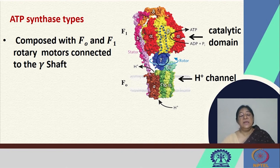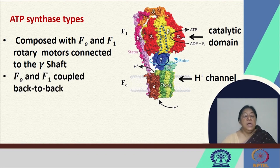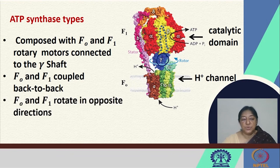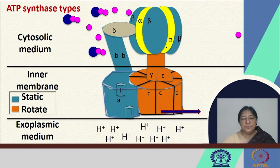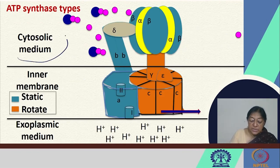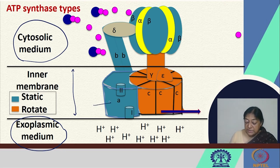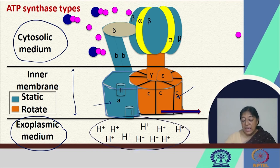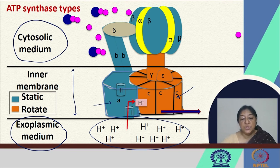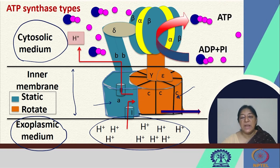The gamma shaft shows counter-clockwise or clockwise movement depending on whether ATP hydrolysis or synthesis is occurring. F0 and F1 are coupled back to back and rotate in opposite directions. There is the cytosolic medium, the exoplasmic medium, and the inner membrane. The static part remains fixed while there is rotation, producing a proton flux. This rotation brings about the formation of ATP through ADP plus Pi to ATP synthesis.